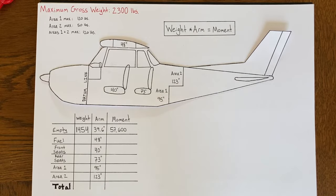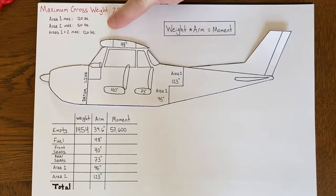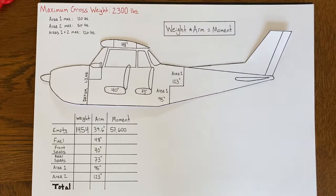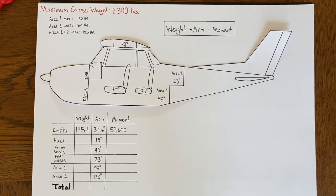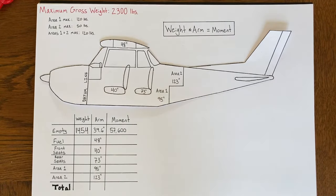There are additional weight limits specified in the pilot's operating handbook. The maximum weight in baggage area one is 120 pounds, the maximum weight in baggage area two is 50 pounds, and the maximum combined weight of the two areas is 120 pounds. We need to obey these weight limits. The other reason weight and balance is important is we need to keep the center of gravity within its allowable limits so that the airplane remains stable and controllable.